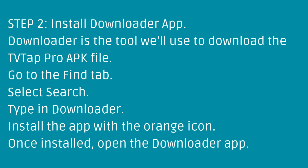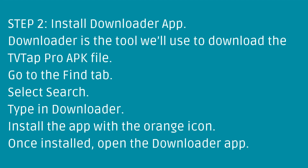Step 2: Install Downloader app. Downloader is a tool we'll use to download the TVTap Pro APK file. Go to the Find tab, select Search, and type in Downloader. Install the app with the orange icon. Once installed, open the Downloader app.